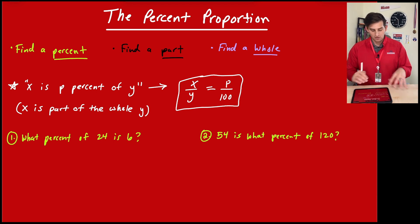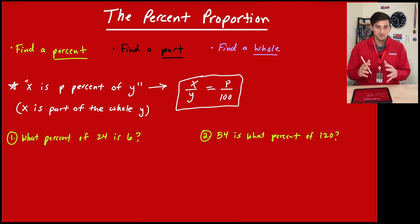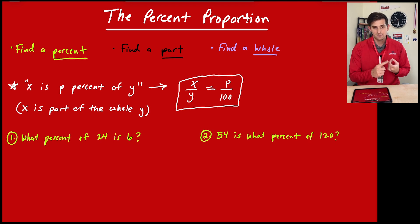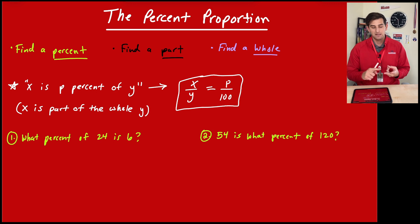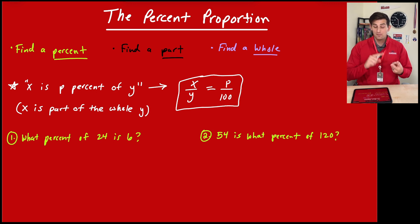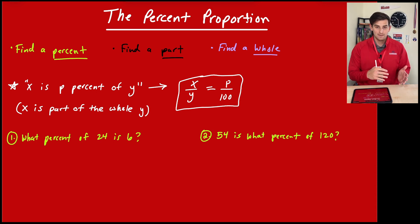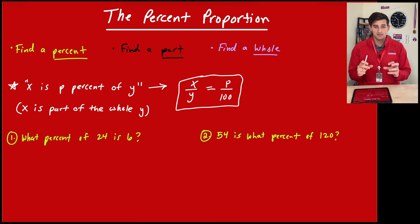We're going to find all three different variables because this question can be asked in three different ways. They might want you to find the percent — giving you x and y, find p. They might want you to find the part — giving you y and p, find x. Or they might want you to find the whole — giving you x and p, find y. The toughest part for students is just knowing which values they're giving us.